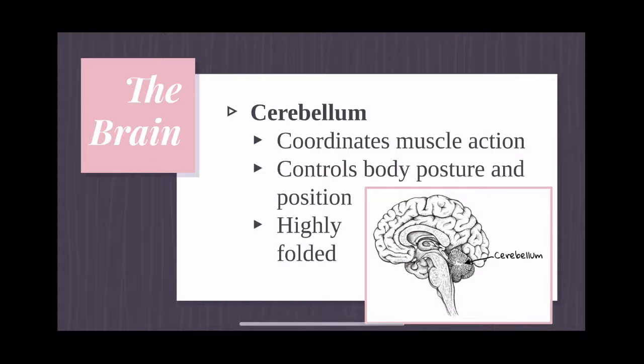The third part of the brain is the cerebellum. It is a highly, highly folded portion kind of underneath the cerebral cortex. Its function is to coordinate muscle action. So every time that you are moving a muscle, it is coming from your cerebellum. So as you are typing notes or writing them, or even if you're just stretching in your chair, your cerebellum is the one who's telling your muscles to contract and relax. It also controls your body posture. Obviously, it takes flexed muscles to keep your body upright and its position, and it is very highly folded. So you should see that in your picture as well.